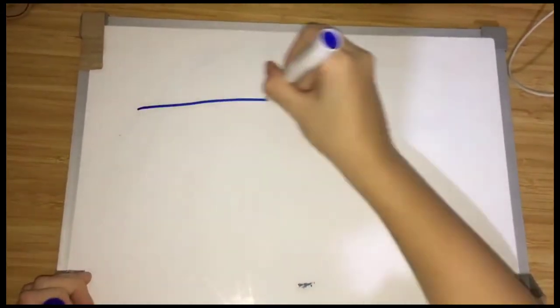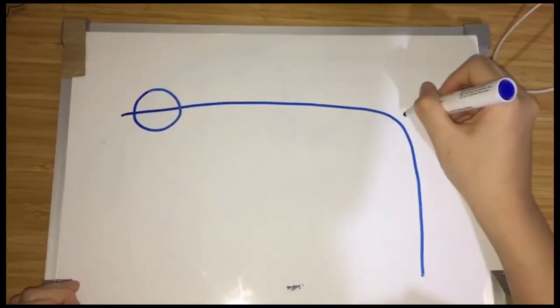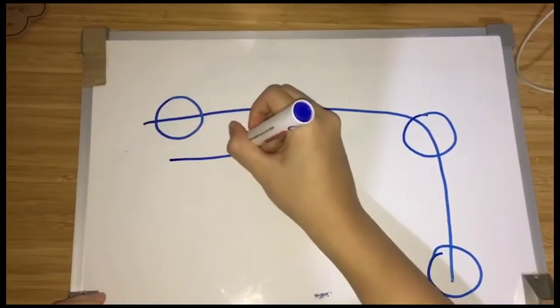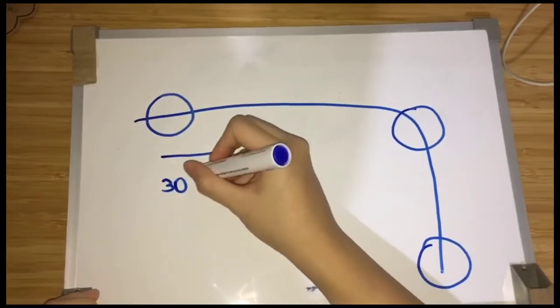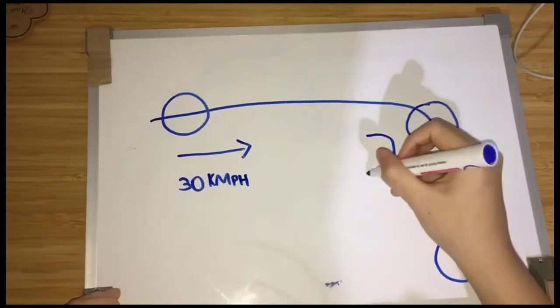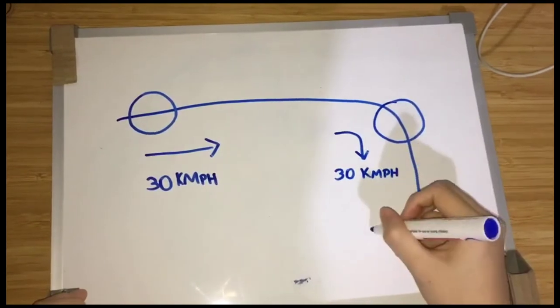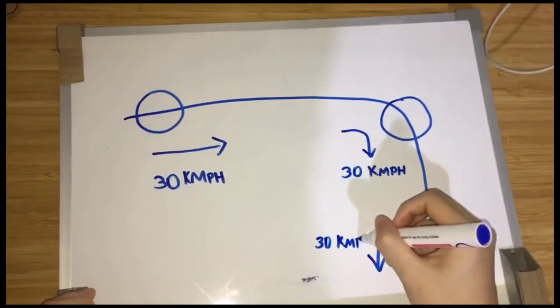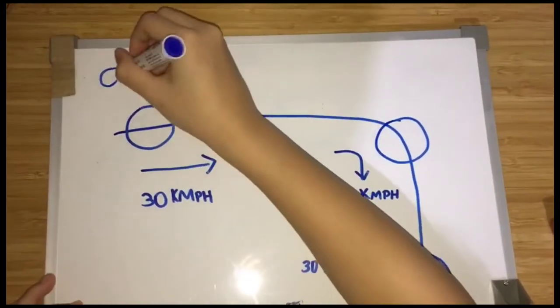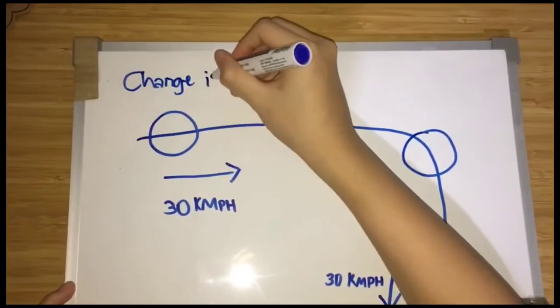Let's see another example, where an object is moving at 30 km per hour. Then it moves right at 30 km per hour and continues forward at 30 km per hour. Is there acceleration? Yes, there is, because there is a change in direction.